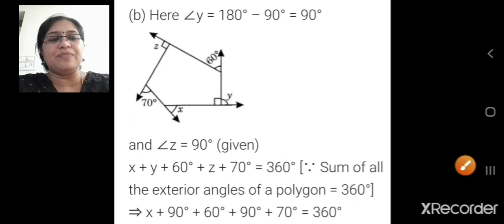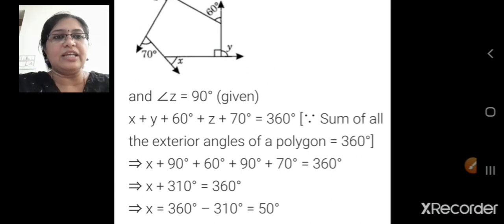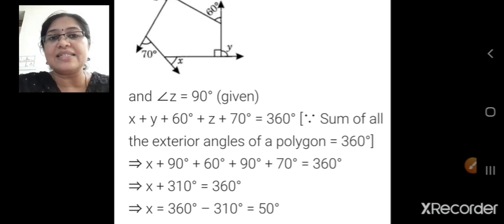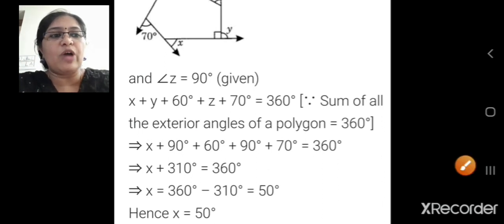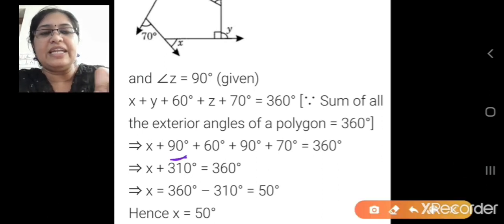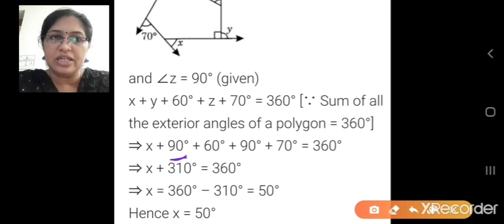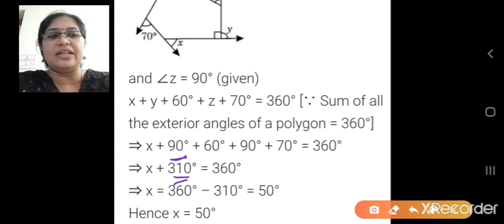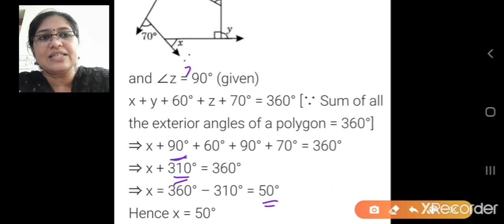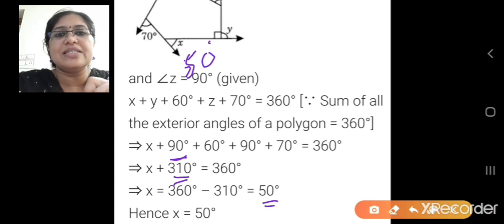So z equals 90 and y equals 90. We write: x plus y plus 60 plus z plus 70 equals 360 degrees — all the exterior angles added together equal 360. Substituting: x plus 90 plus 60 plus 90 plus 70 equals 360. Adding the known values gives 310. So x equals 360 minus 310, which equals 50 degrees. Your x value is 50 degrees.